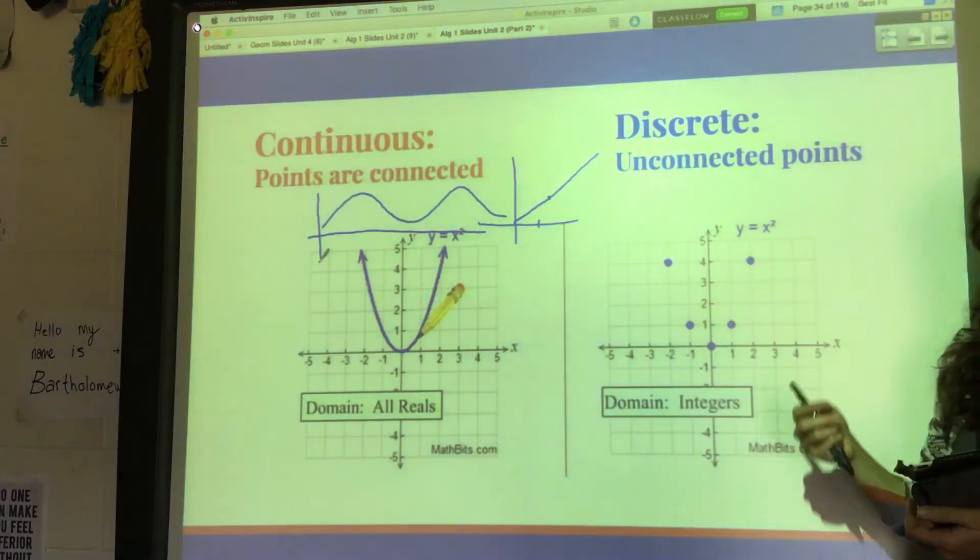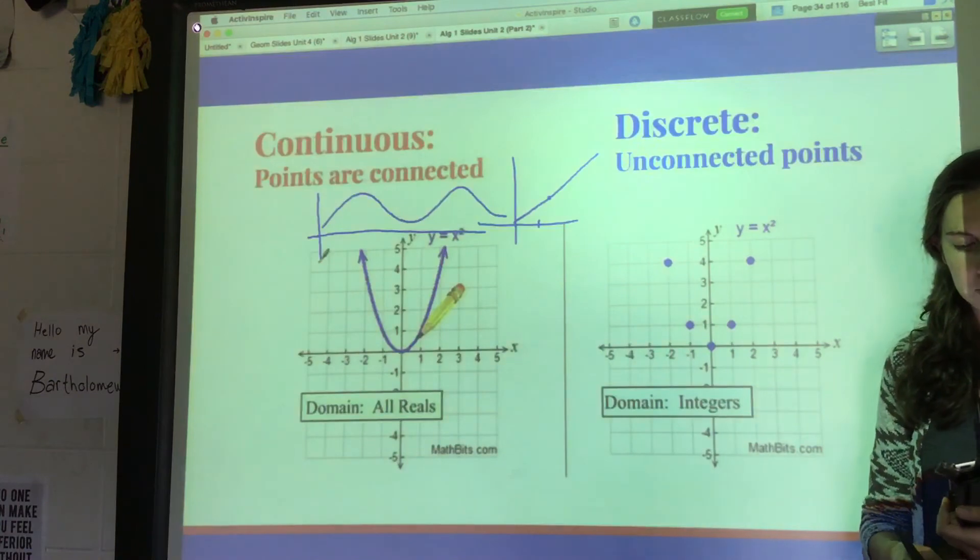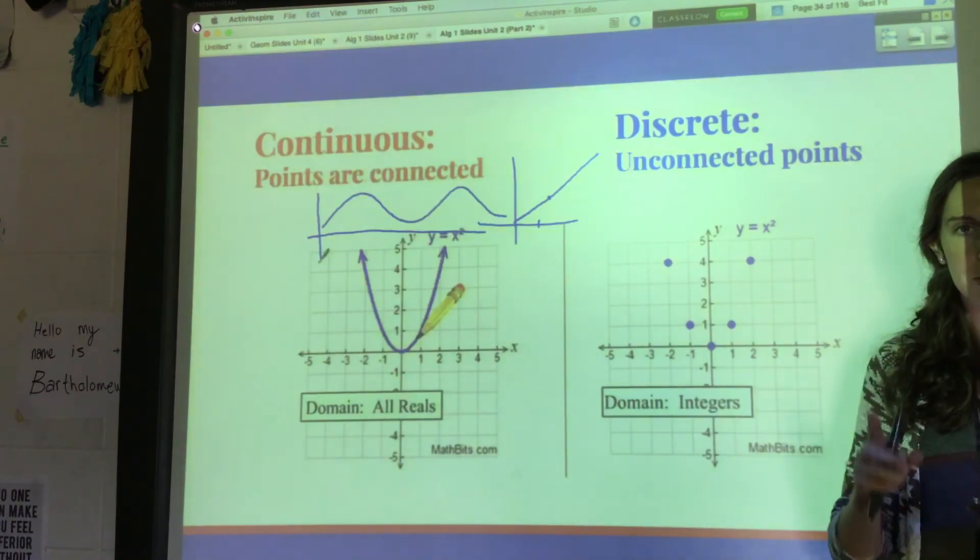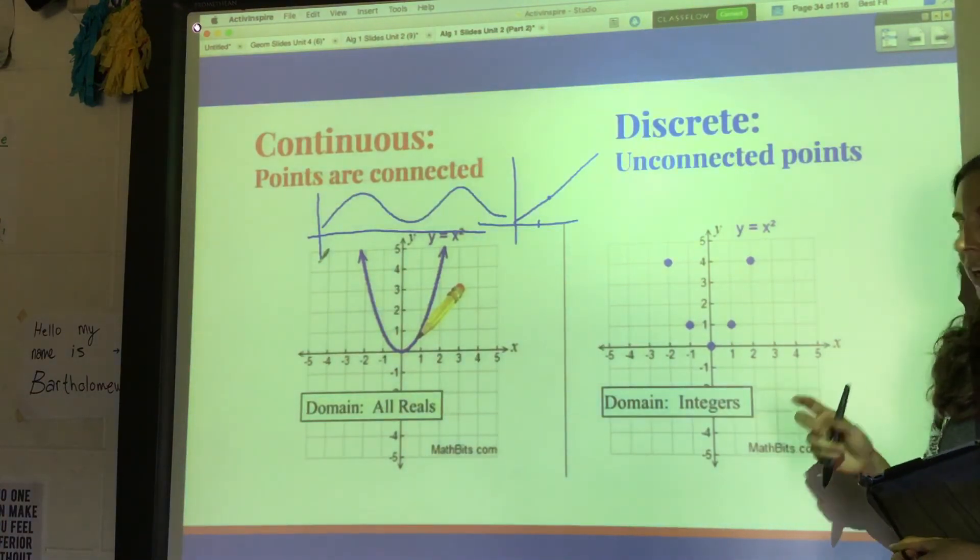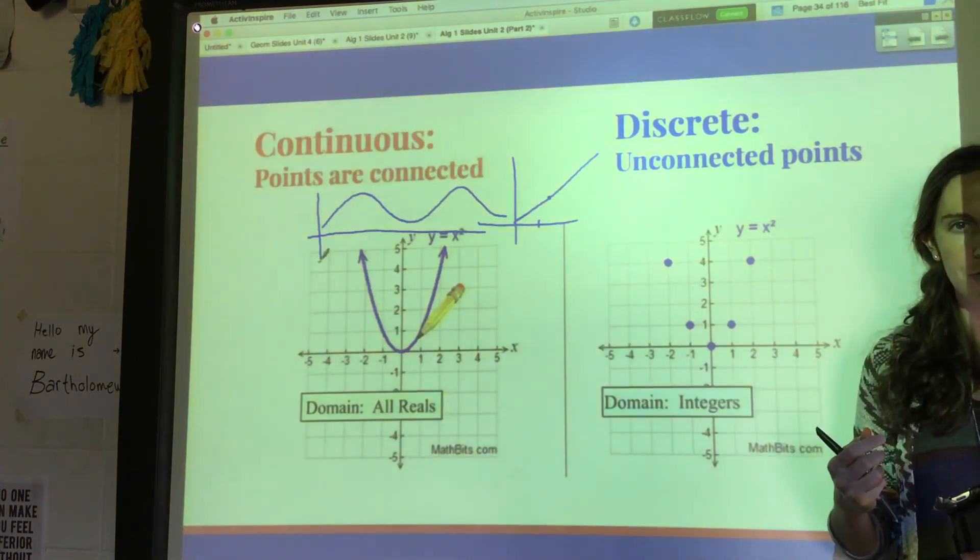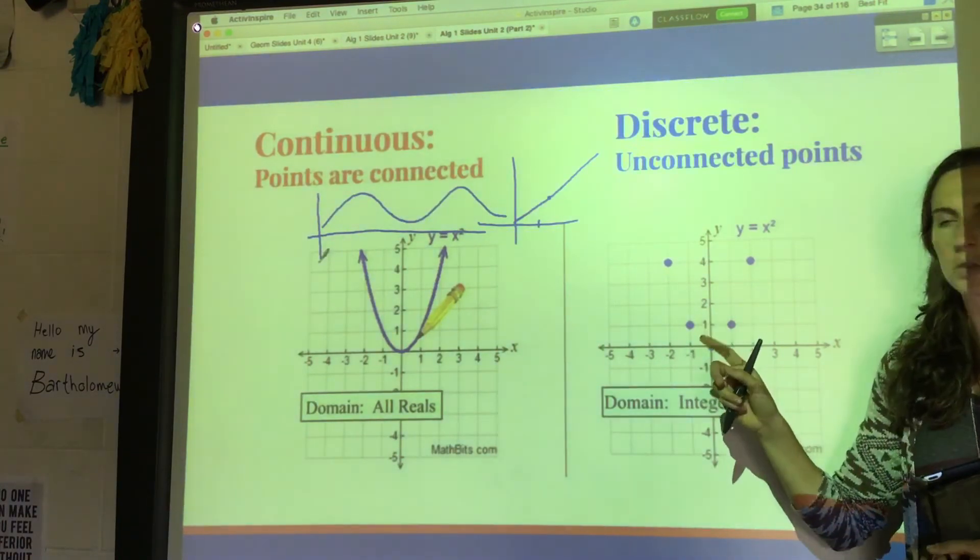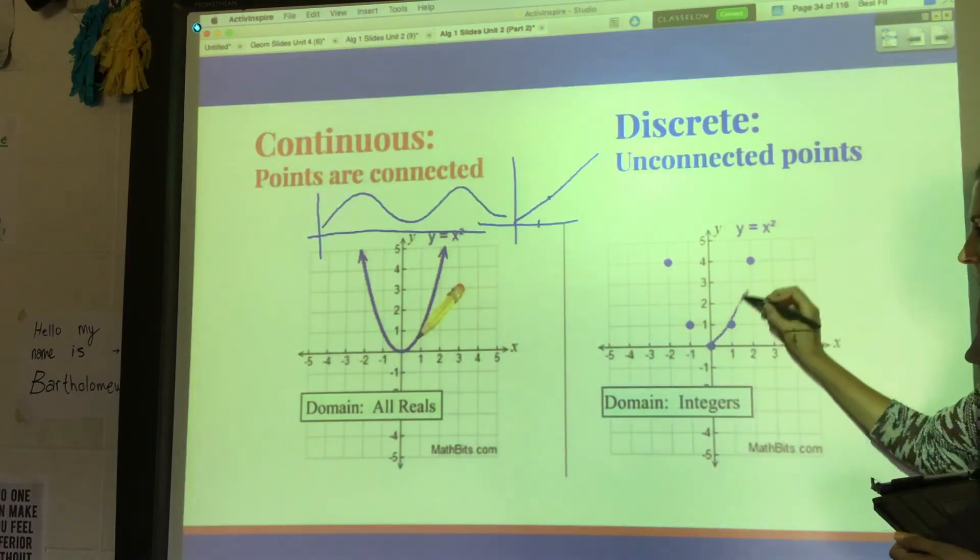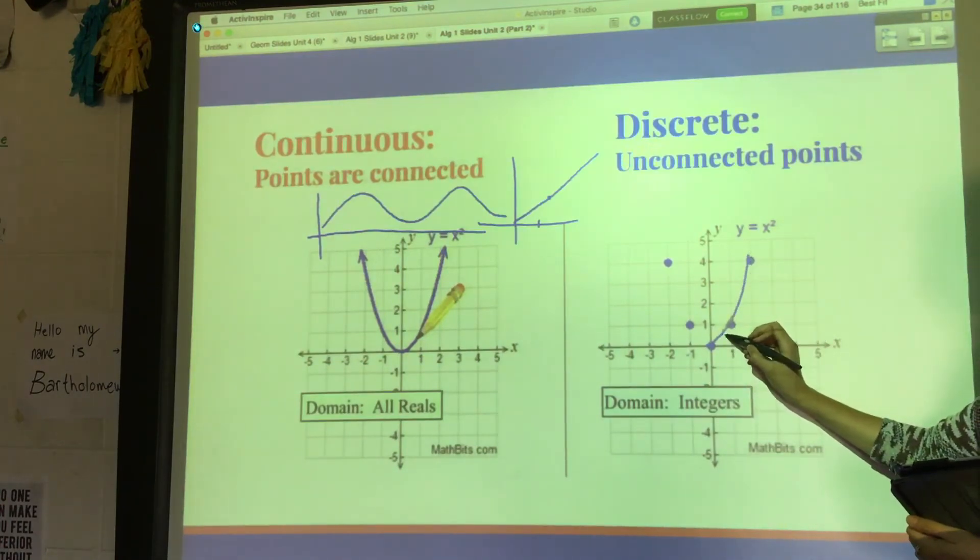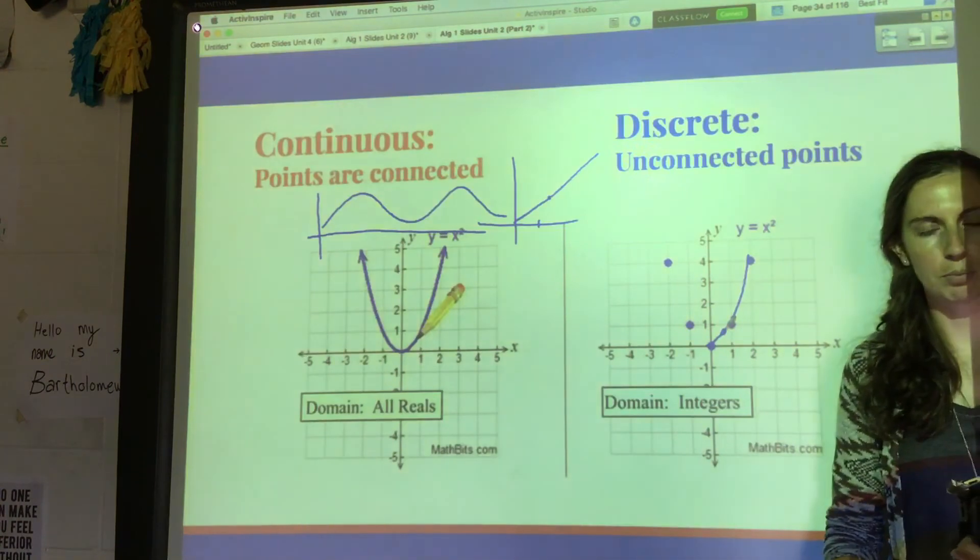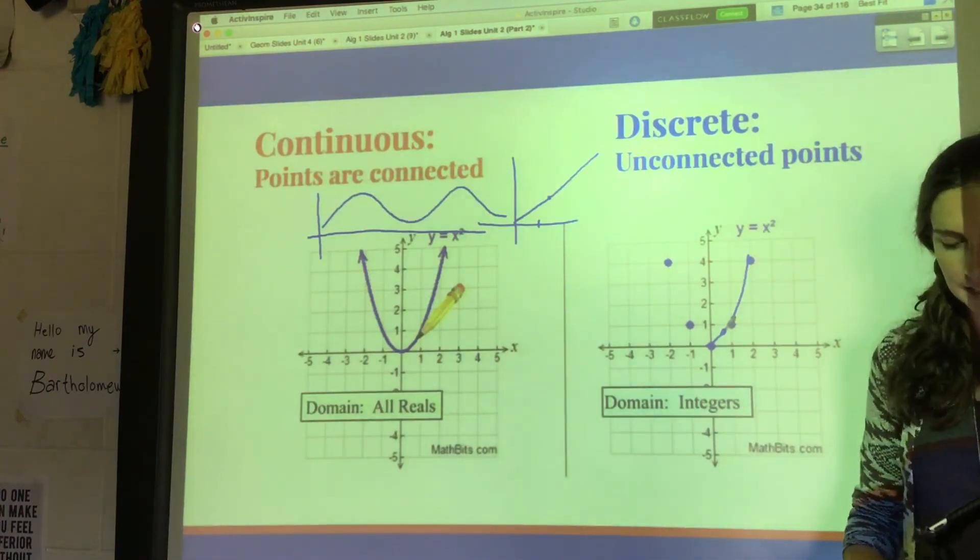Some examples of discrete would be like, anytime you're talking about people or animals, you can't have like 0.2 of a frog, hopefully not, so those would be discrete values. I don't want to have like 0.7 of a frog population, that doesn't make any sense.